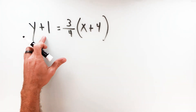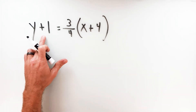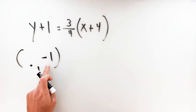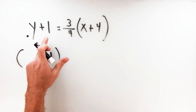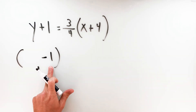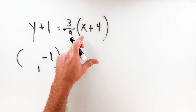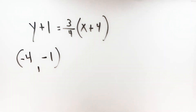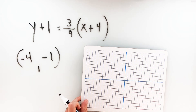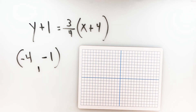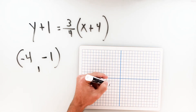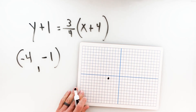In the formula, it's y minus the y-coordinate. So if I have a plus here — y plus 1 — that means it was actually y minus negative 1, giving me a y-coordinate of negative 1. Same thing on the right: x minus negative 4 gives me the plus 4, so my x-coordinate is negative 4. So the point through which this line passes is negative 4, negative 1.